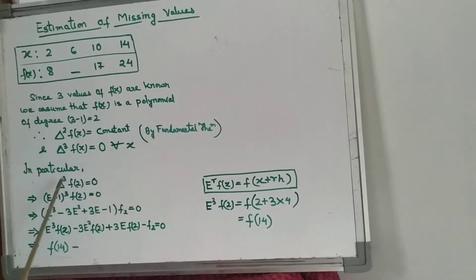As we know the relation between del and E, we can write in place of del: E minus 1, because 1 plus del is equal to E, so del is E minus 1. Therefore (E - 1)^3 f(x) is equal to 0.